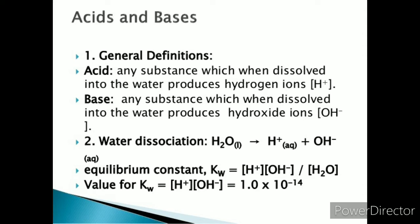So what are acids? Any substance which, when dissolved in water, produces hydrogen ions (H⁺ ions) — those substances are called acids. And what are bases? Bases are all those substances which, when dissolved in water, produce hydroxide ions (OH⁻ ions).